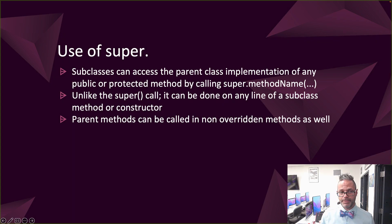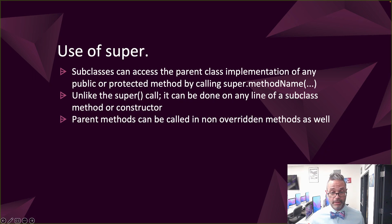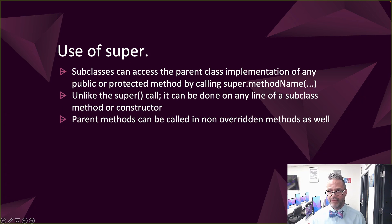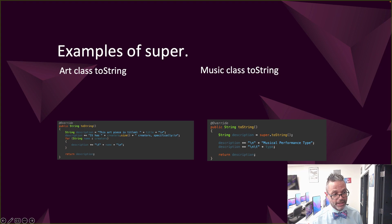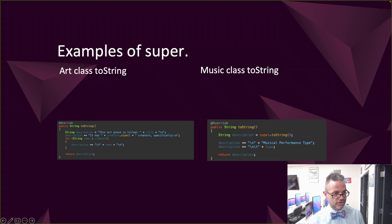We also have super dot notation. super.methodName() is how I can access a parent class's implementation of any method. Unlike the super() constructor call, super dot can be placed anywhere inside a subclass method, even inside a method of a different name. It can also be used in non-overridden methods.